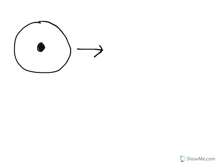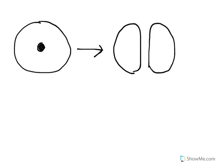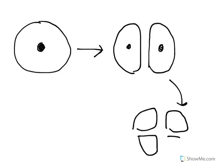This zygote is going to undergo a number of cell divisions where the nucleus is going to divide and the cytoplasm is going to get split up into smaller and smaller portions. These are called the cleavage divisions. The first cleavage division gives us two cells, the second cleavage division four cells, the third cleavage division eight cells, sixteen cells, and so on.